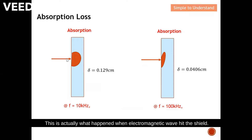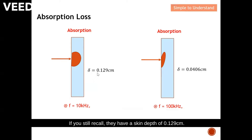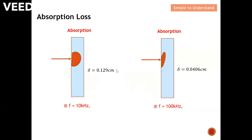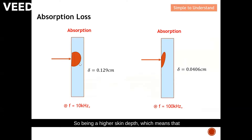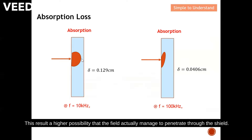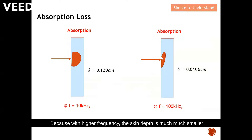Let's understand what skin depth means visually. The diagram on the left is at 10 kHz with a skin depth of 0.129 cm; the diagram on the right is at 100 kHz with a skin depth of 0.0406 cm. A higher skin depth means the wave penetrates deeper into the shield, resulting in a larger E1. At higher frequency, the skin depth is much smaller, so less electromagnetic wave penetrates through the shield.